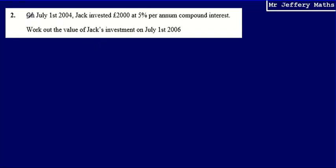This is question two. Here we're told that on July the 1st 2004, Jack invested £2,000 at 5% per annum compound interest. Then we're asked to work out the value of Jack's investment on July the 1st 2006.